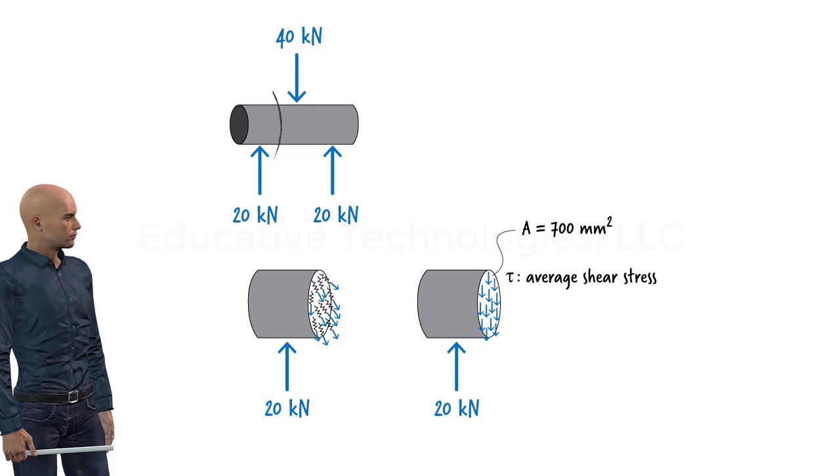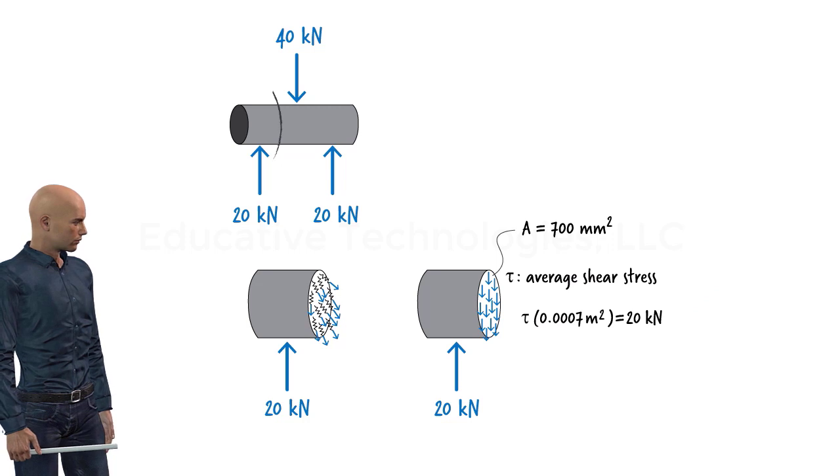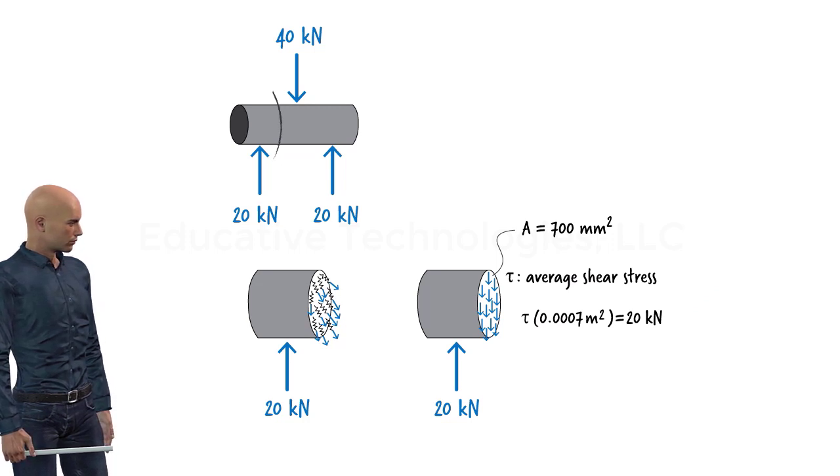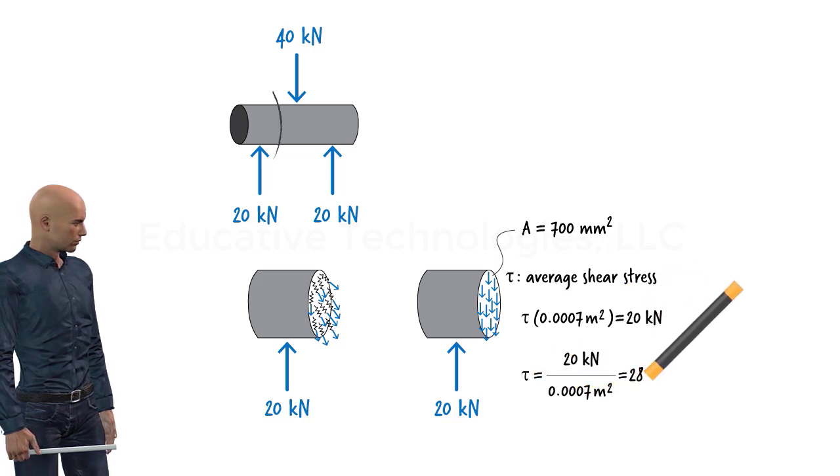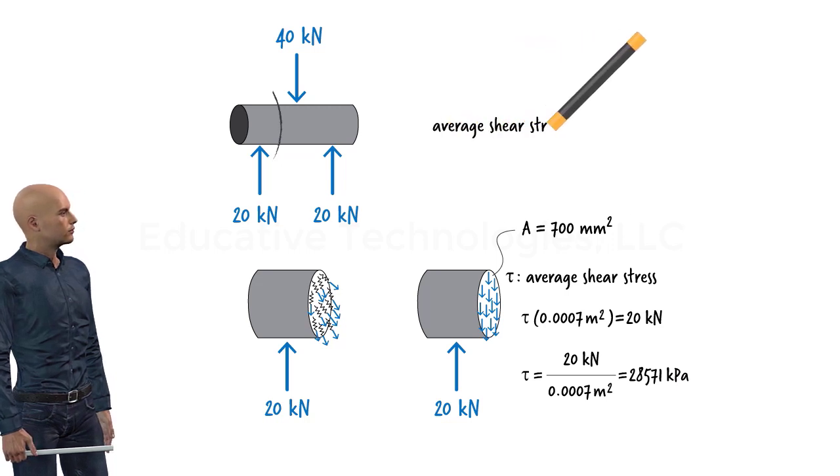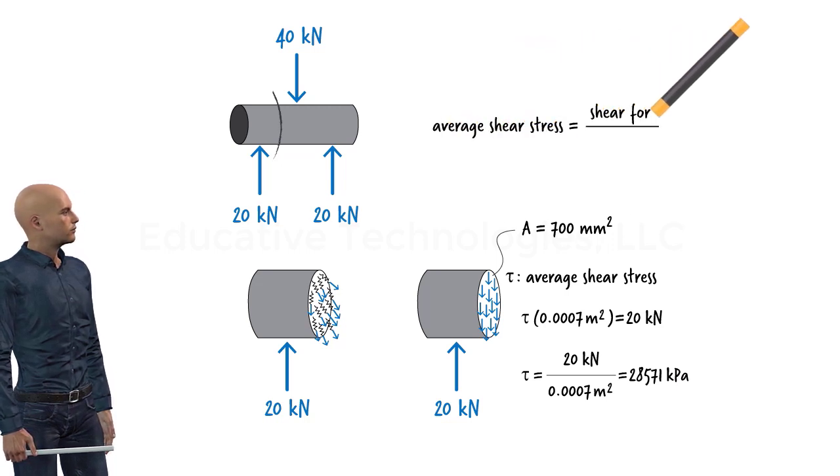Since the static equilibrium of the bolt segment must be maintained, we can write the equilibrium equation. This equation simply states that the sum of the forces in the vertical direction must be zero. We can solve this equation for the average shear stress in the bolt. Hence, the average shear stress is shear force per unit area.